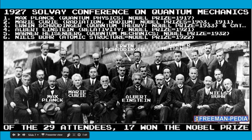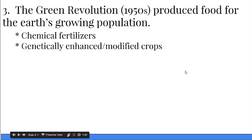Here are some famous scientists of this era in the early 1900s, including Albert Einstein and Marie Curie. The Green Revolution started in the 1950s, but especially in the 1970s and 1980s we see it really explode.